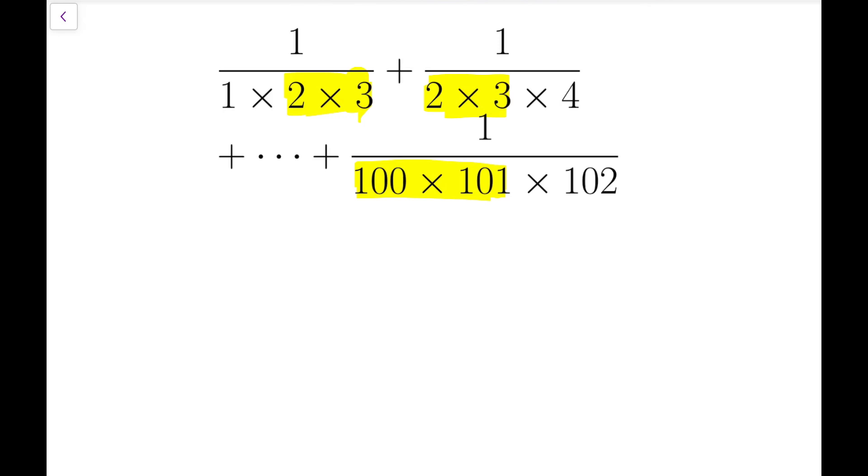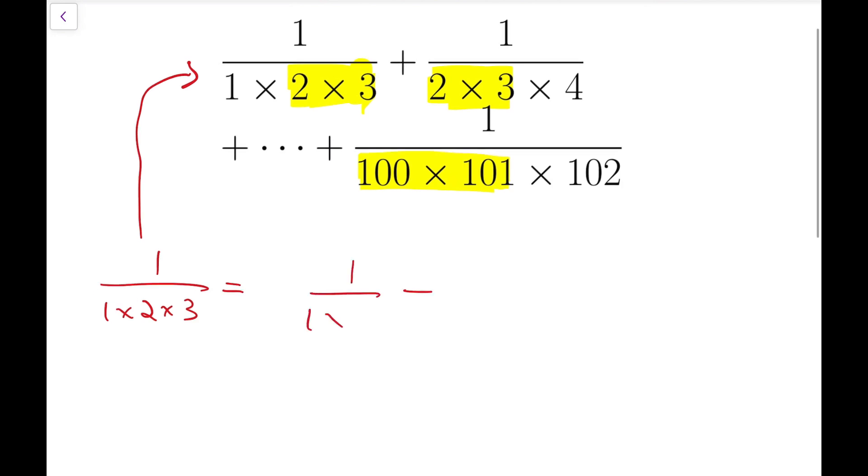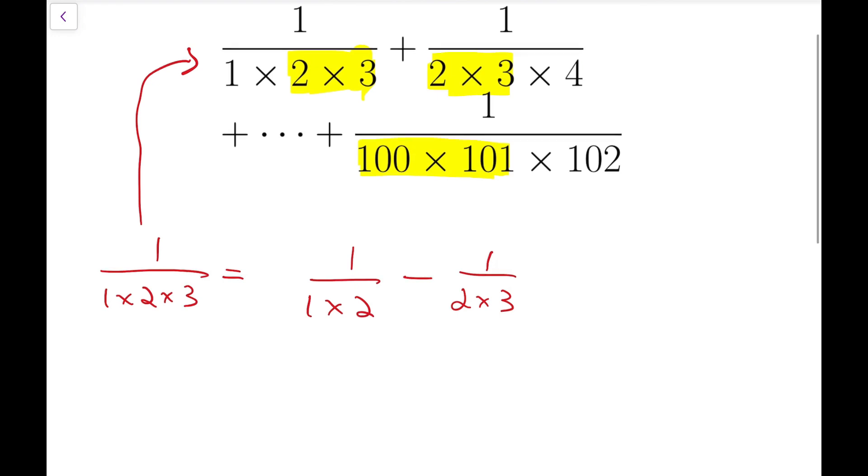So this motivates us to consider splitting each fraction into difference of the product of two integers, but not simply one. So let's take a look at this. For example, 1 over 1 times 2 times 3, I'm going to split it, hopefully, into this form: 1 over 1 times 2 minus 1 over 2 times 3. So now we have two numbers multiplied together at the bottom of each fraction. We're just hoping for that. It's not saying that this is really true.